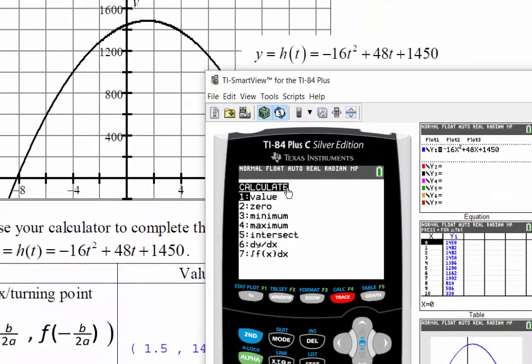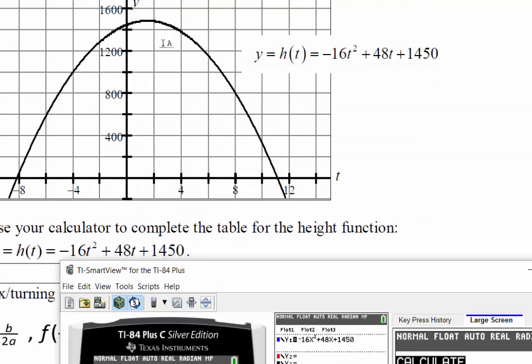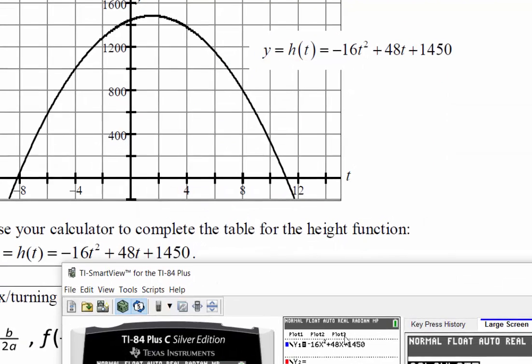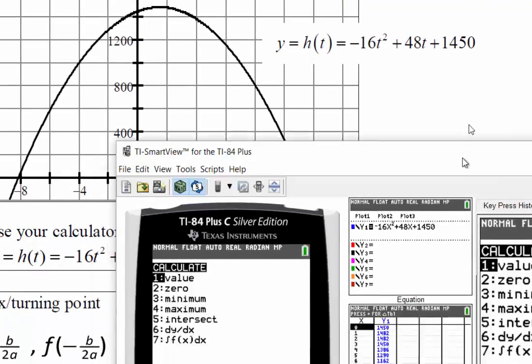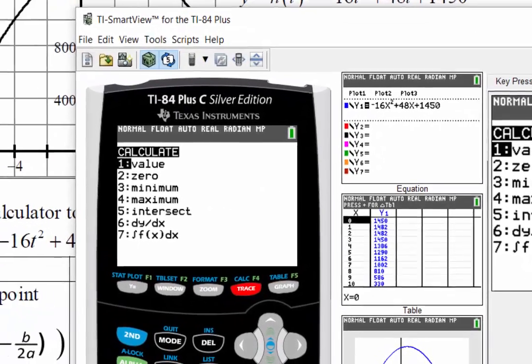Now, you have to ask yourself, is the vertex a maximum value or a minimum value? Well, if the parabola opens down, we always have a maximum value. So on our calculator, we want to press number 4 for max.